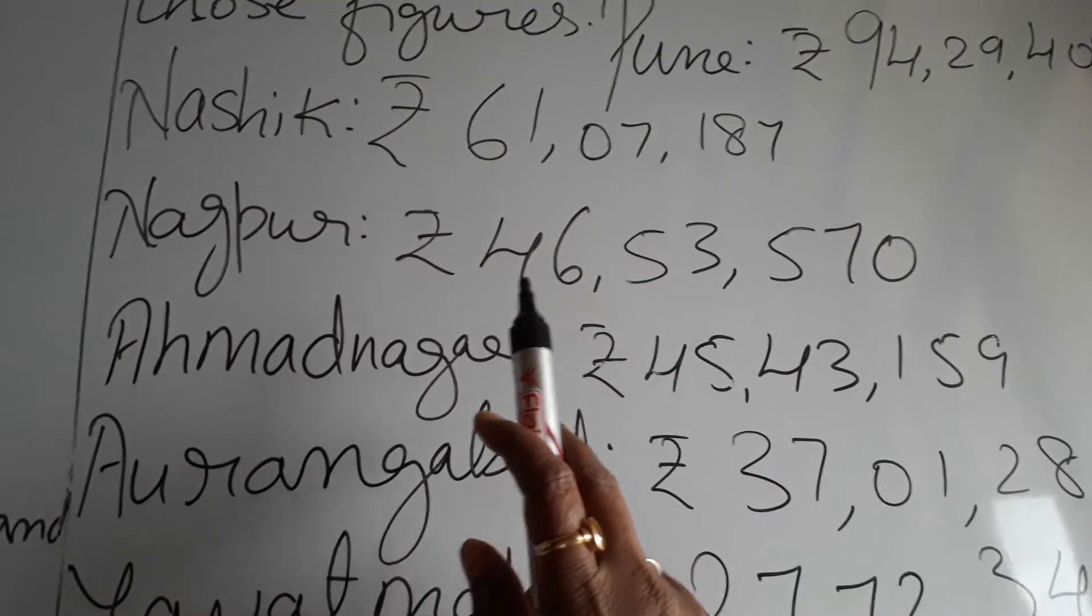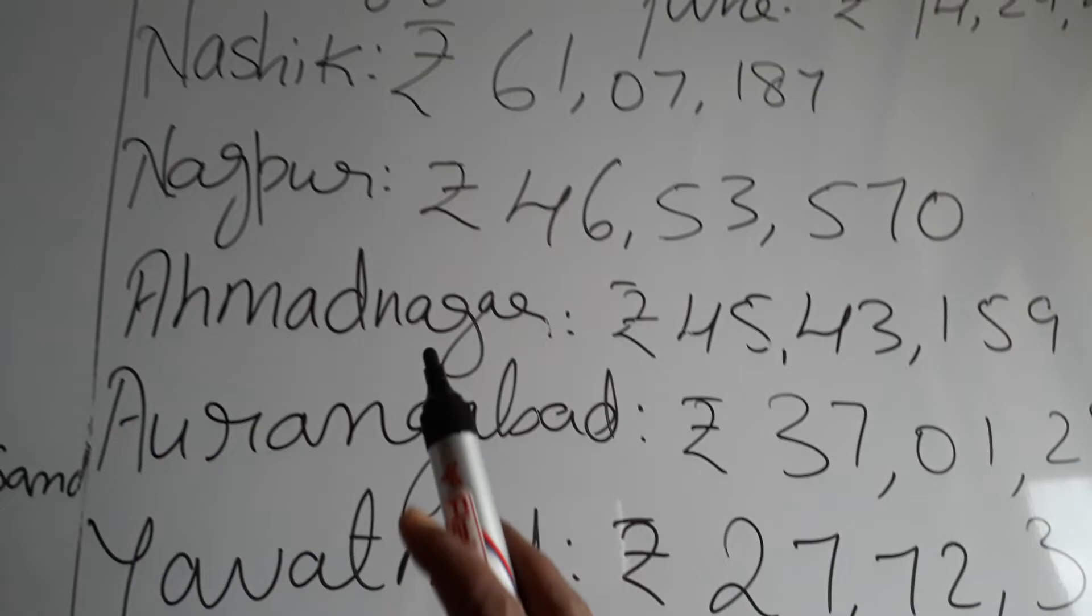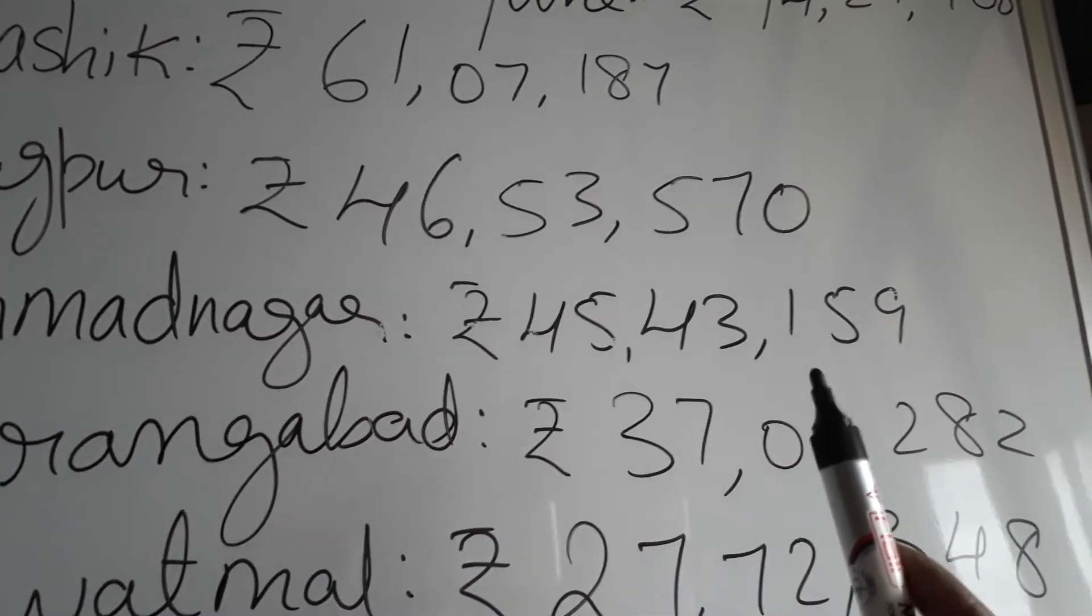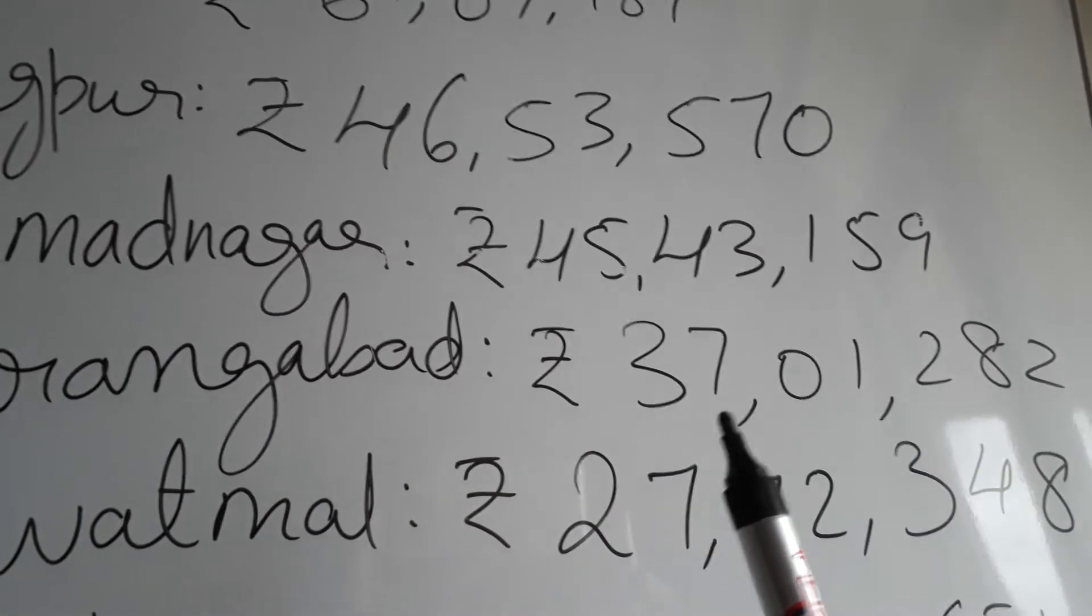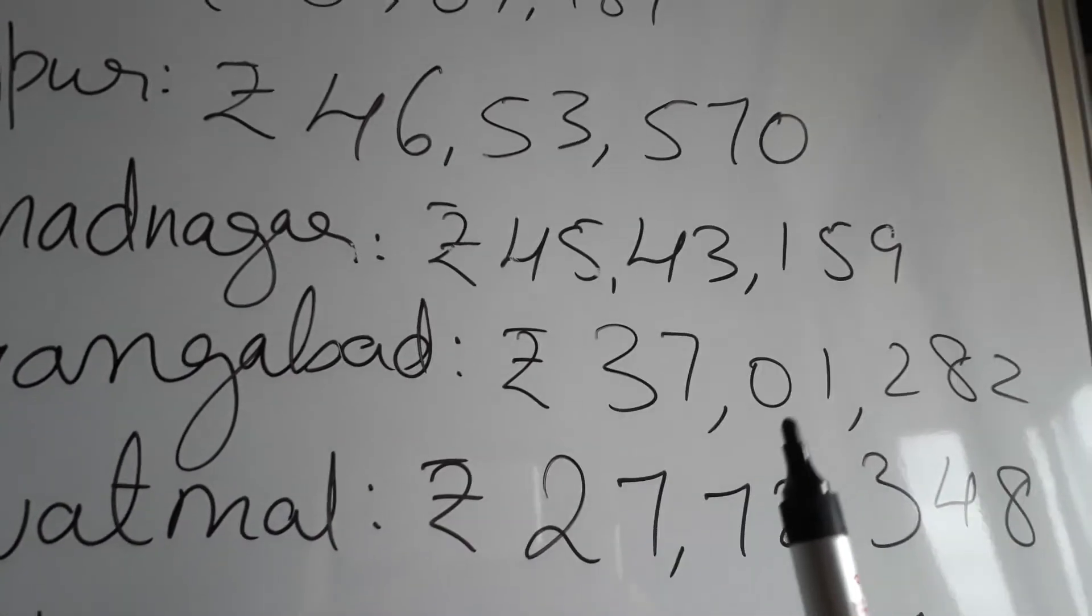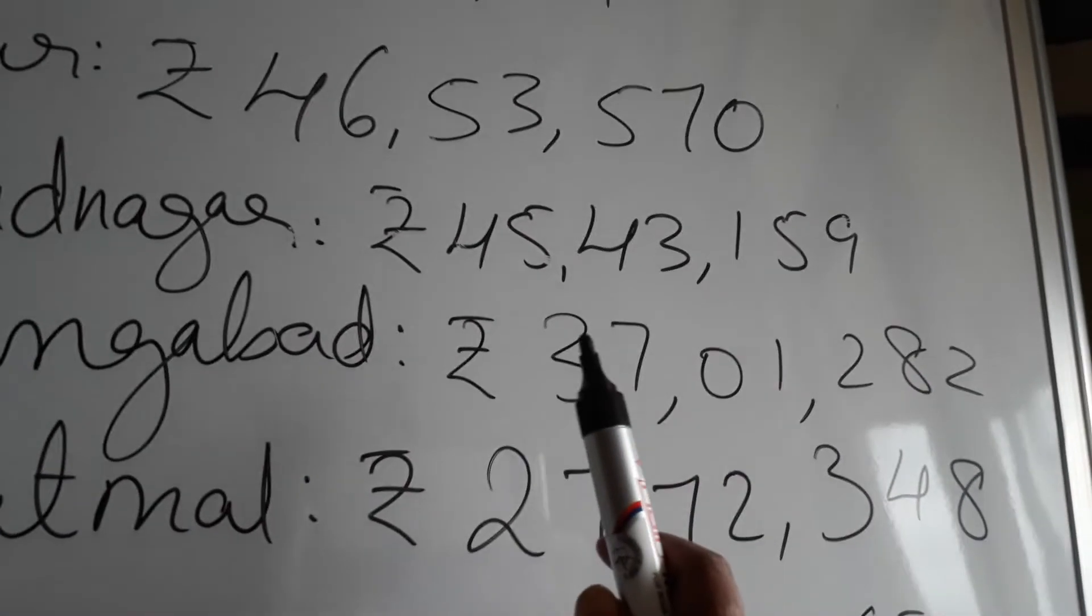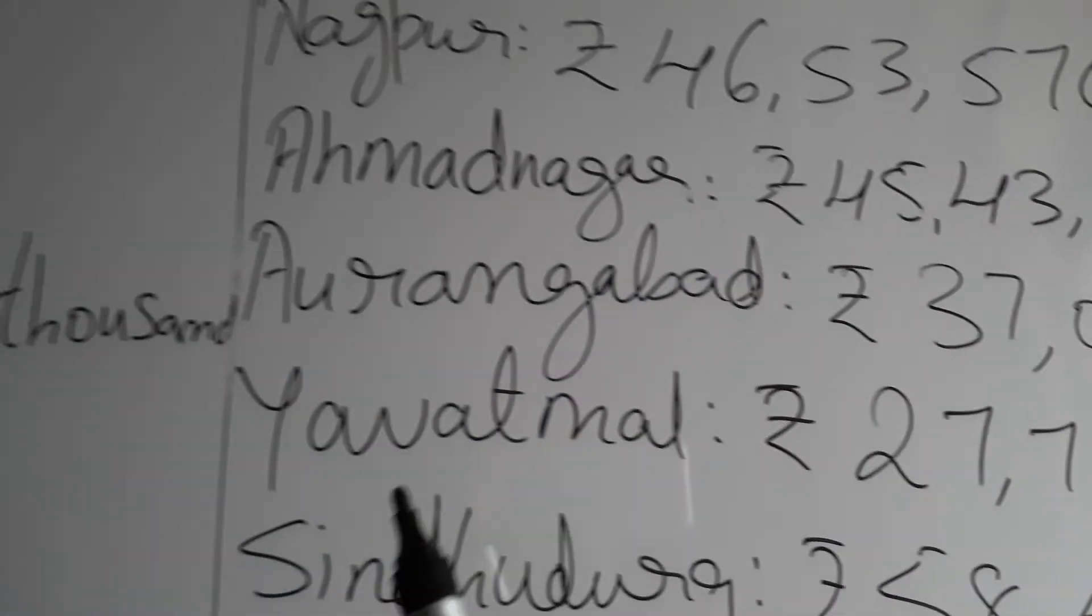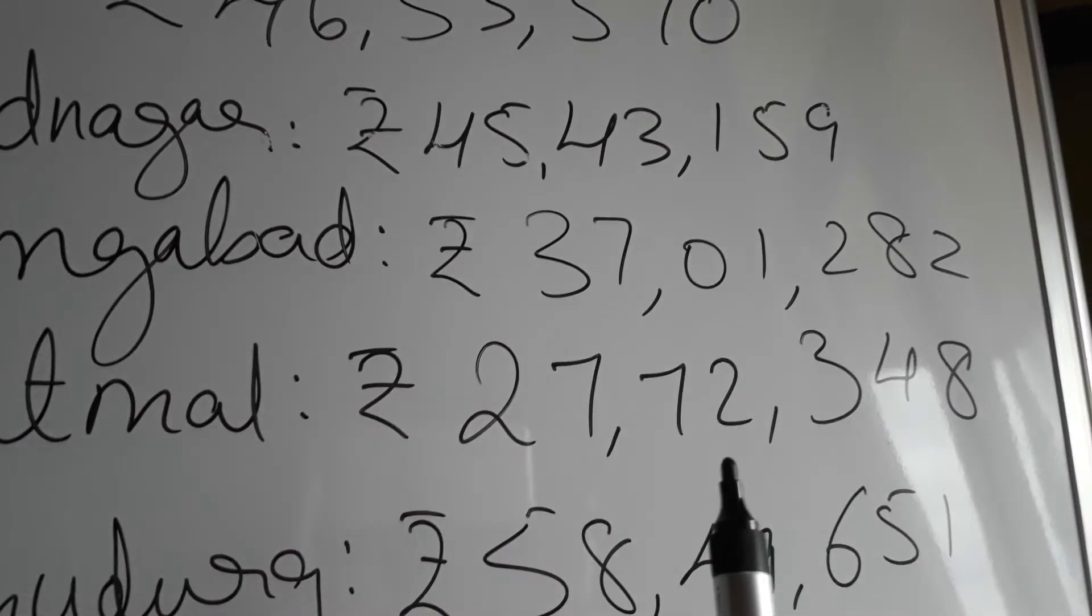Next comes Nagpur: rupees 46 lakh, 53,570. Ahmednagar: rupees 45 lakh, 43,159. Aurangabad: rupees 37 thousand - sorry, 37 lakh, 1,282. Once more: 37 lakh, 1,282.